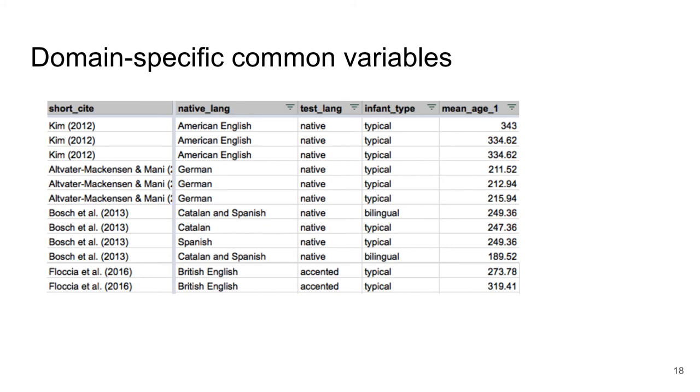In this example we see that languages are coded with some precision. See for example American and British English. This is because infants might learn languages differently across accents and cultures and in fact for this specific research topic some papers have put forward that British babies are delayed in comparison with their American peers. We also code whether infants are tested in their native language, a non-native language, accented speech or an artificial language.